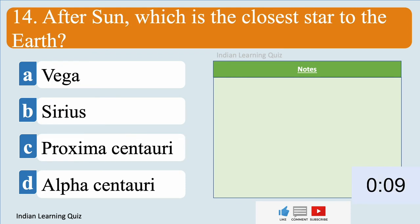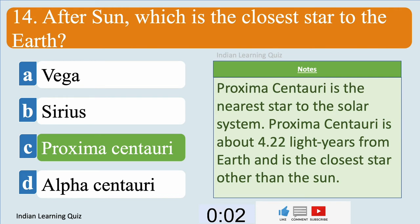After Sun, which is the closest star to the Earth? Answer: Proxima Centauri.